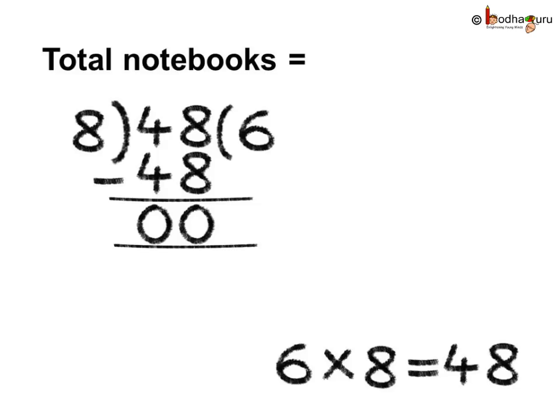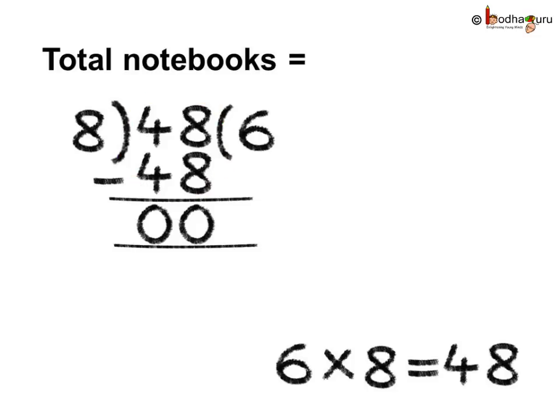Let us divide 48 by 8. If you remember the table of 8, 6 times 8 is equal to 48. So 48 divided by 8 gives us 6, and 48 minus 48 is equal to 0. So the answer is 6. Thus for 48 rupees, he can buy 6 notebooks.